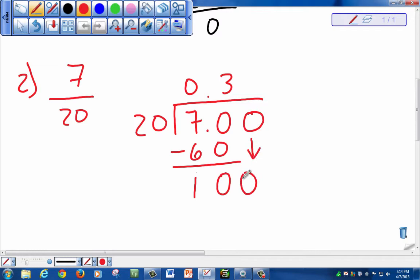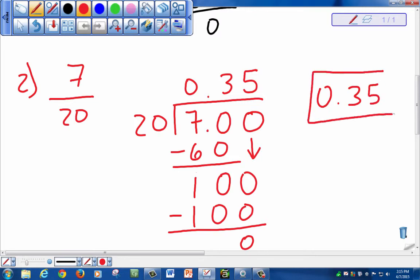20, how many times could it fit into 100? Which will be 5. We put our 100, we subtract, and our remainder is 0. Once our remainder is 0, that's when we will stop dividing. Our final answer will be 0.35, which is the same as 7 over 20.